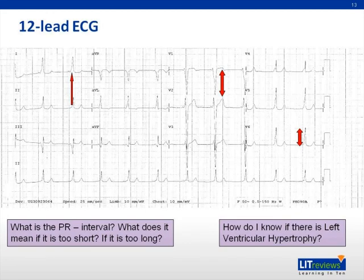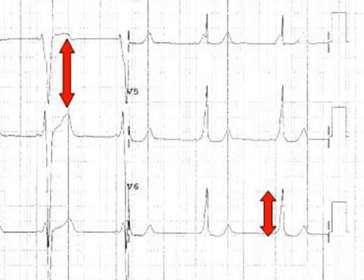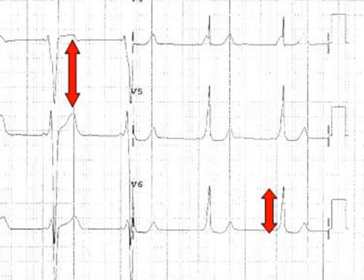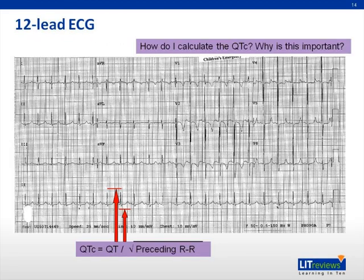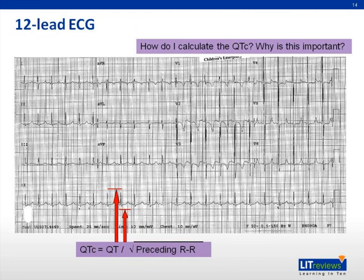Conversely, if the PR interval is too long, that would suggest an AV block. Don't forget to look at the size of the R waves in the lateral chest leads to assess for left ventricular hypertrophy — there would usually be accompanying deep S waves in the anterior chest leads suggesting LVH. It is important not to miss long QT syndrome, as these patients are predisposed to ventricular tachycardia, specifically torsades. The corrected QT is calculated by taking the QT interval and dividing it by the square root of the preceding RR interval. If the corrected QT is longer than 0.45 seconds, that meets the criteria for long QT syndrome.